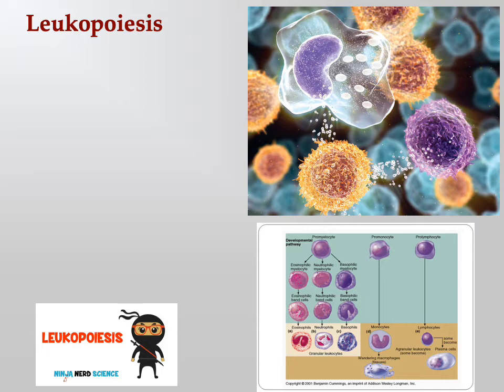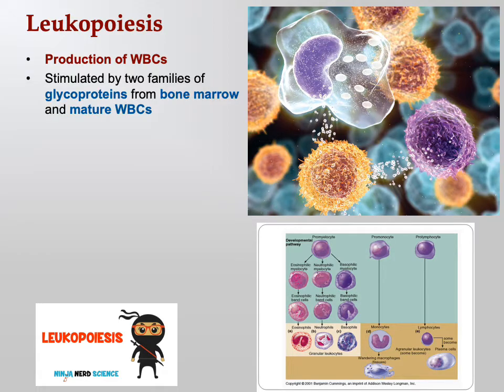What would be the trigger for making white blood cells? Think about it — when do you need white blood cells? You need them when you've been infected by something, and so infection is actually the trigger. Leukopoiesis — the production of white blood cells — is stimulated by two families of glycoproteins from the bone marrow and also from mature white blood cells.